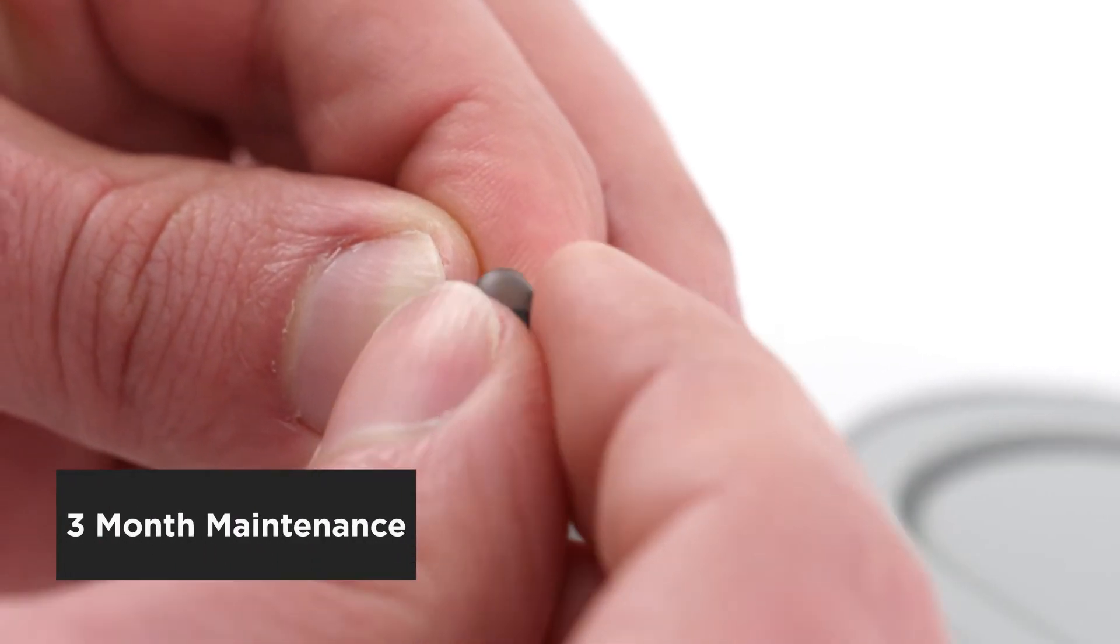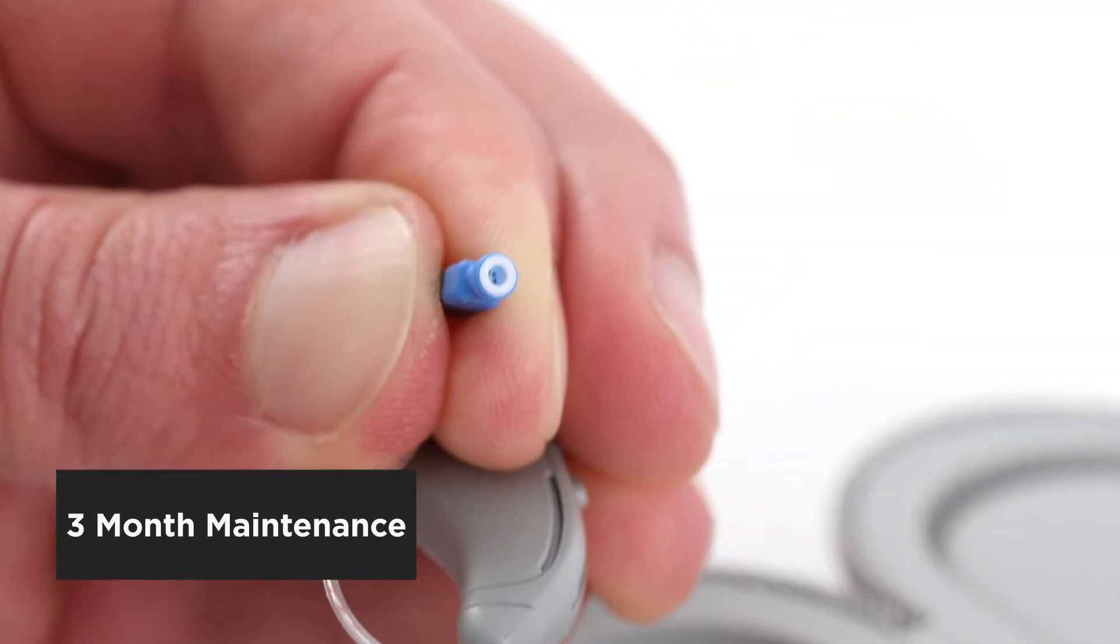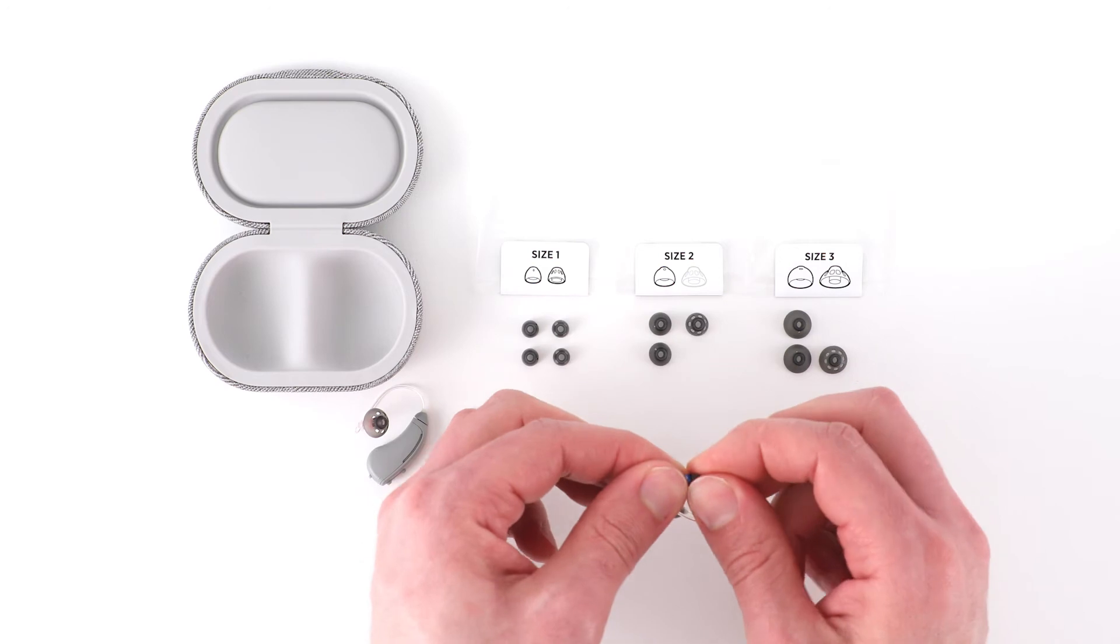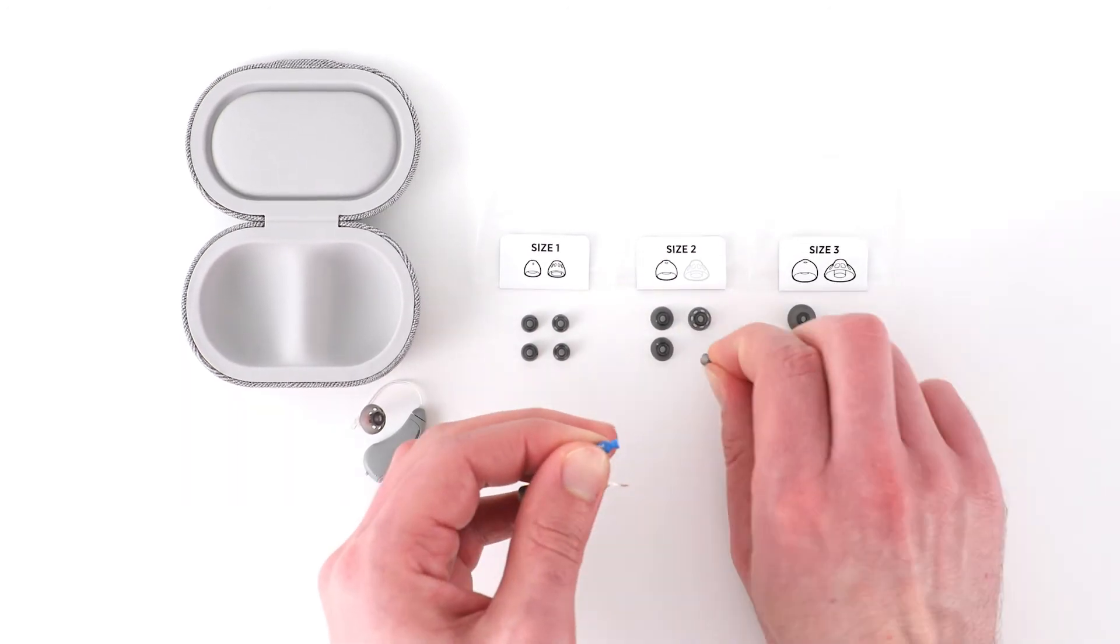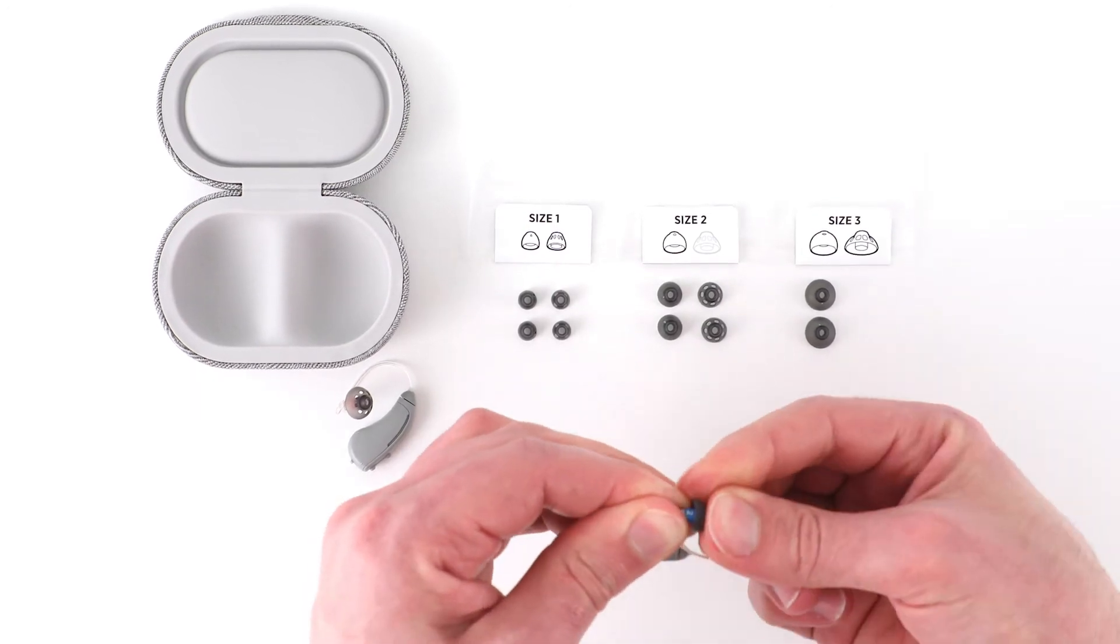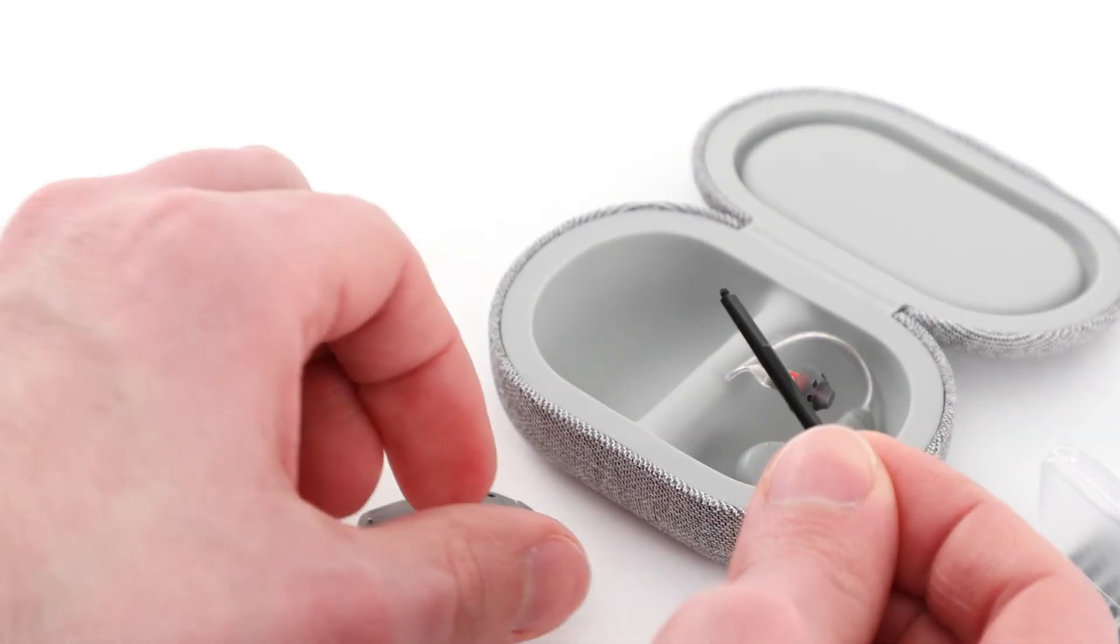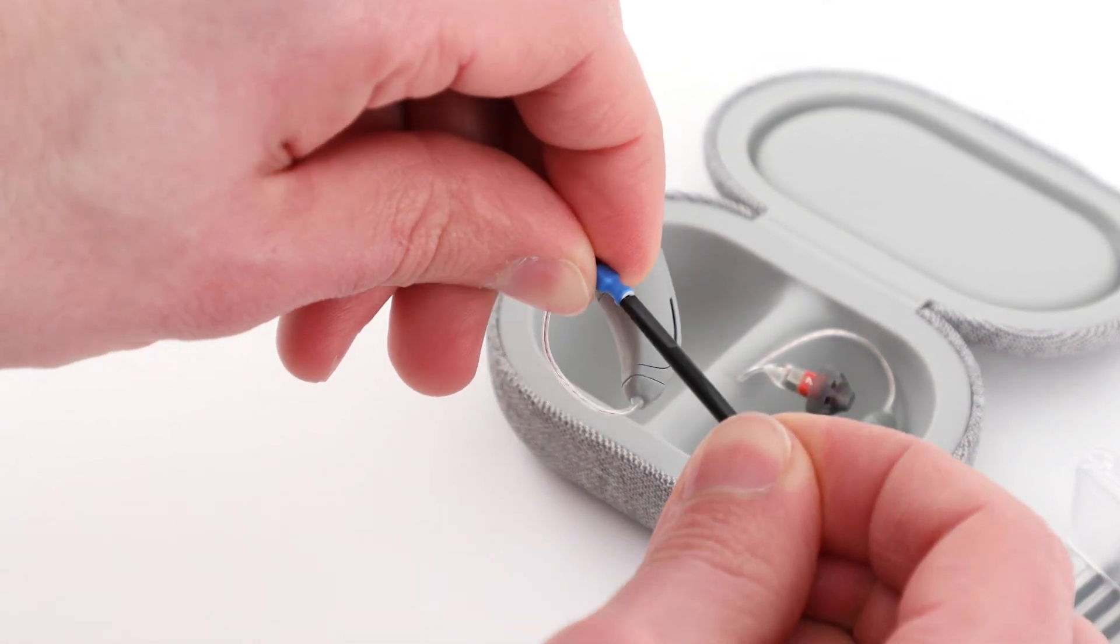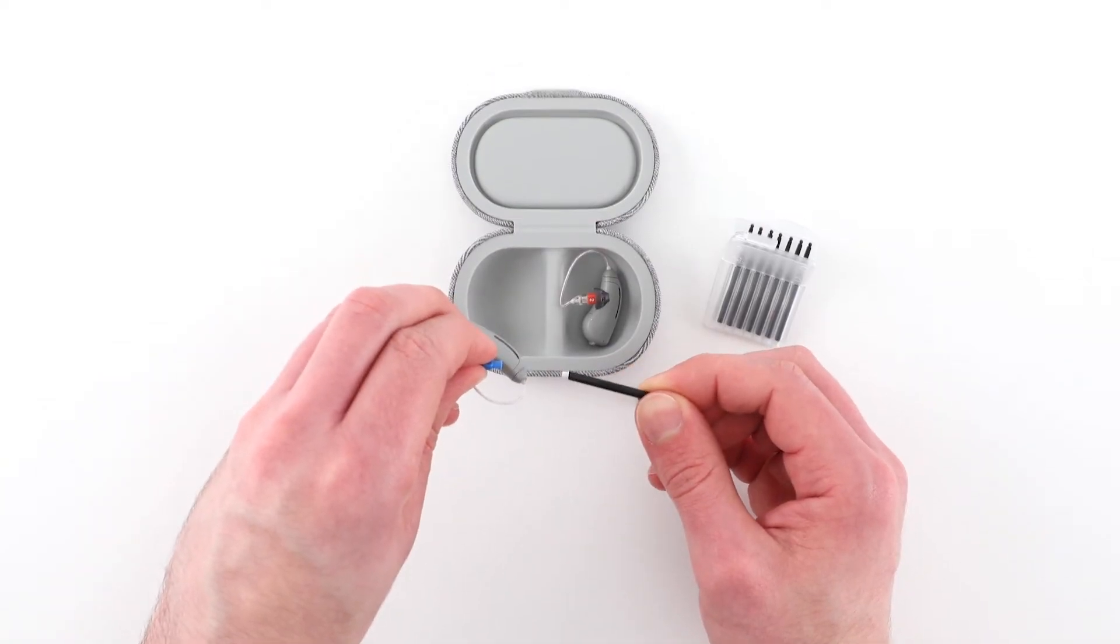It's recommended to replace the ear tips and wax guards every three months to mitigate wax buildup. However, this can vary by individual. Replace the ear tips immediately if they become discolored or stiff, or if they fall off when you remove the hearing aids. Replace the wax guards if they get blocked by earwax buildup, or if you notice that the hearing aids sound quieter than usual.